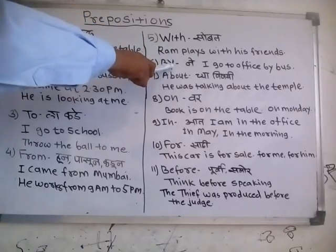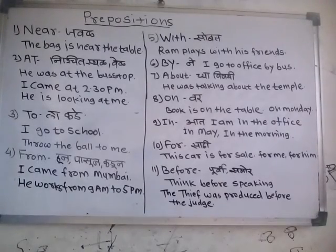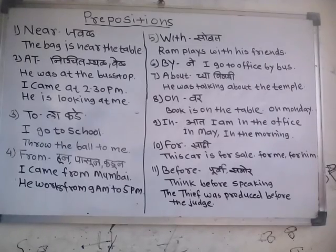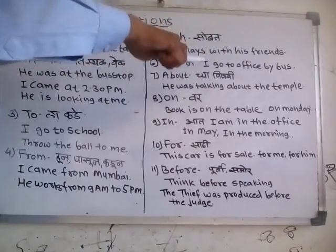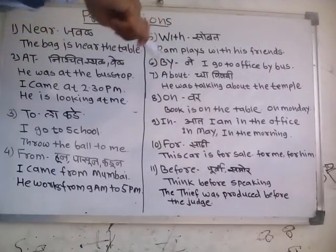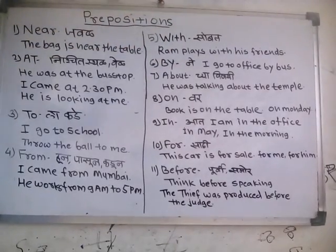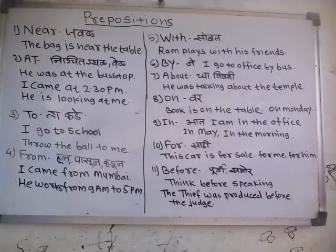Next is 'by'. 'By' shows the device — it is used to show the device which is used by the subject of the sentence. For example: I go to office by bus, meaning I use the bus to go to my office. I go to office by train. Cut the lemon by the knife. Cut the paper by the scissors. In this way, you can use 'by'.